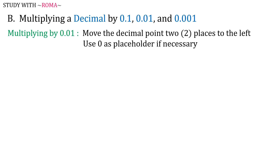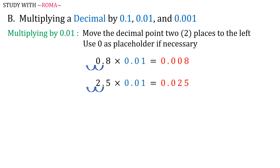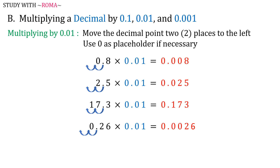When multiplying by 0.01, move the decimal point two places to the left, and use 0 as a placeholder if necessary. For example: 0.8 times 0.01 is equal to 0.008; 2.5 times 0.01 is equal to 0.025; 17.3 times 0.01 is equal to 0.173; 0.26 times 0.01 is equal to 0.0026; and 4.28 times 0.01 is equal to 0.0428.